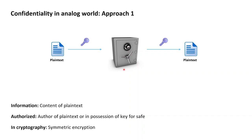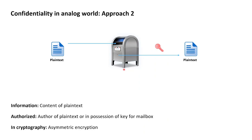Again, you may now pause and think about an alternative approach that equally well provides confidentiality in the analog world but doesn't suffer from the same limitation that the safe approach has. The second approach to providing confidentiality in the analog world is making use of mailboxes. Let's assume it's Bob that wants to retrieve a confidential piece of plaintext. For that, Bob needs to own a mailbox for which only Bob has the corresponding private key to open.